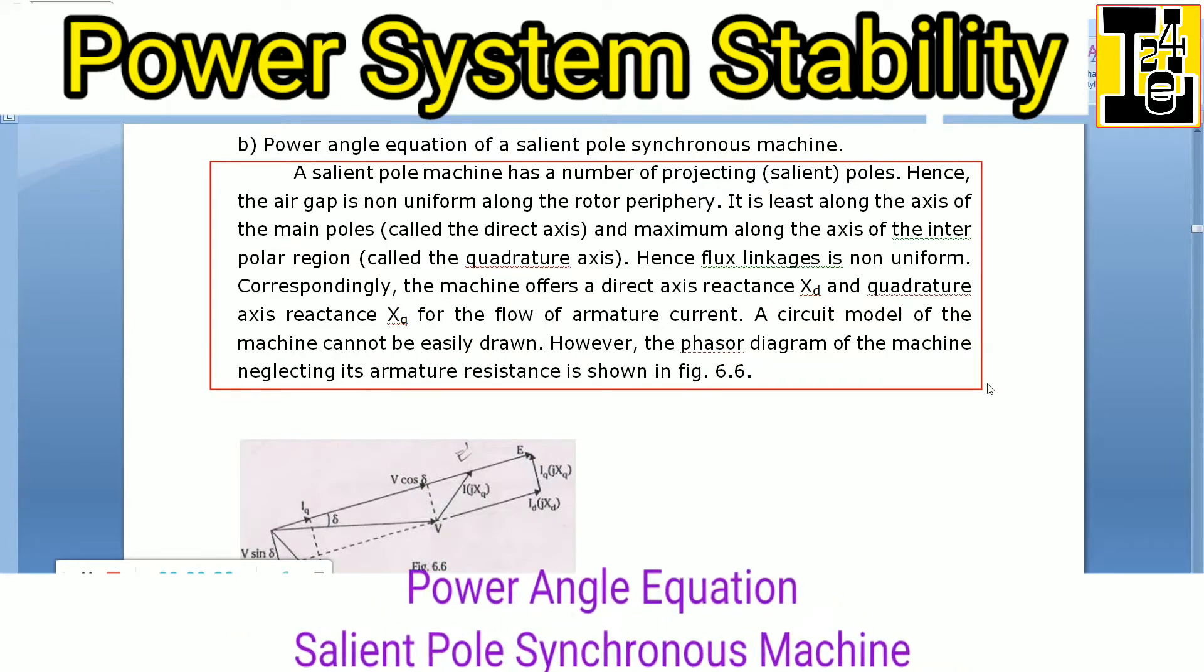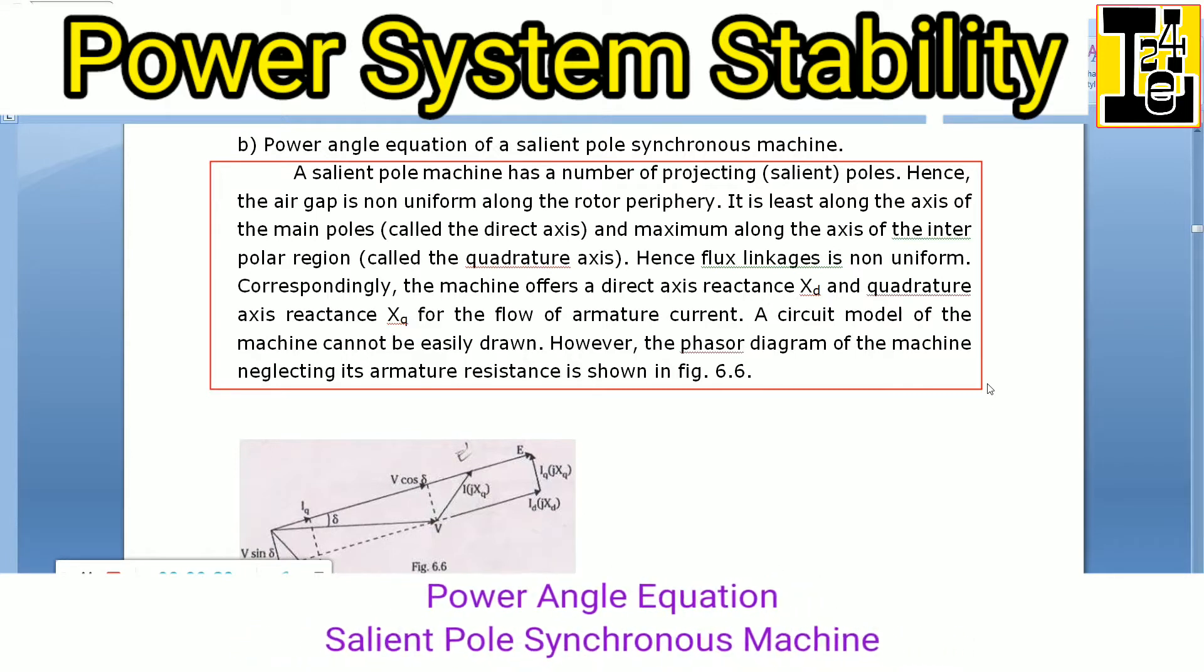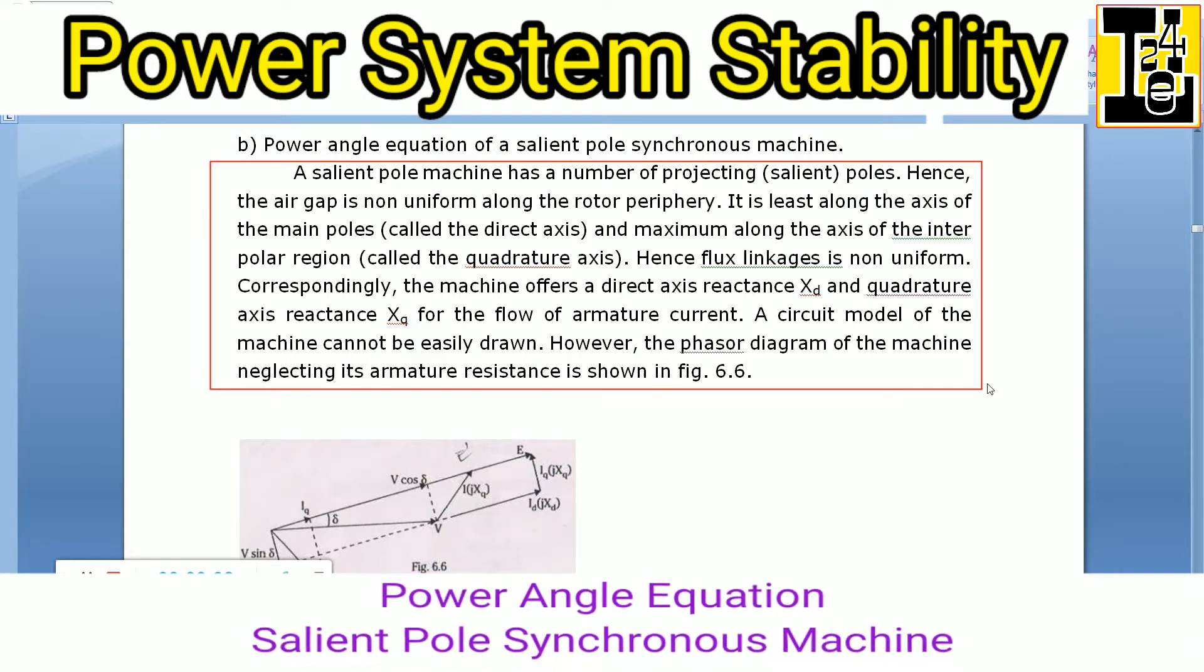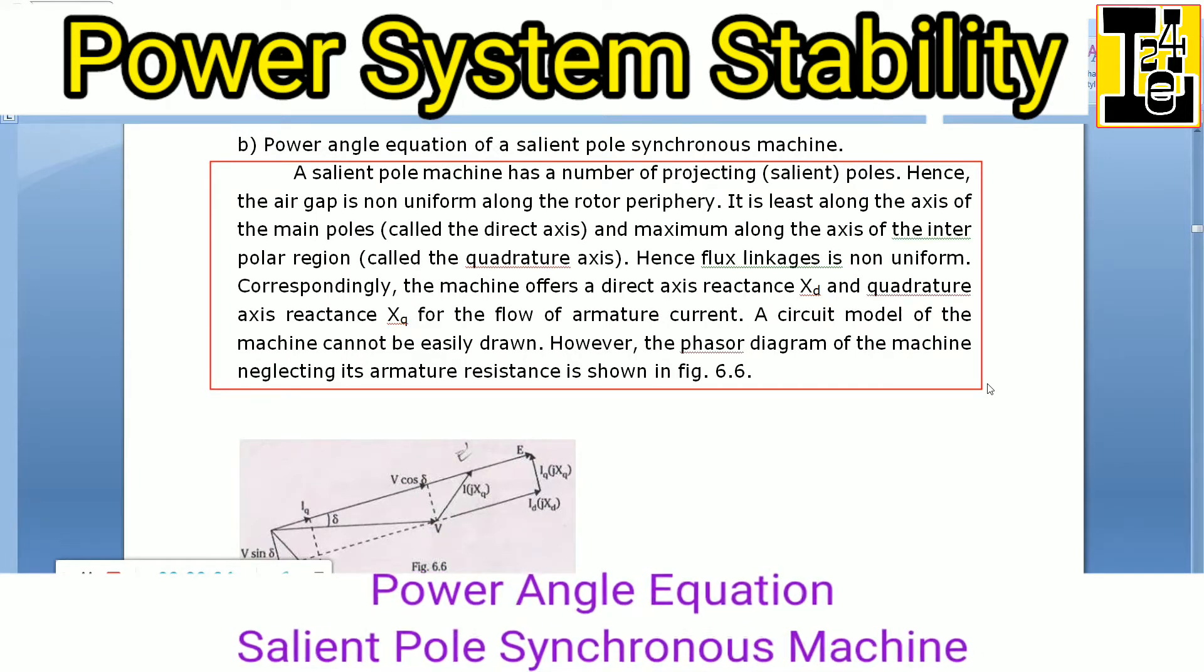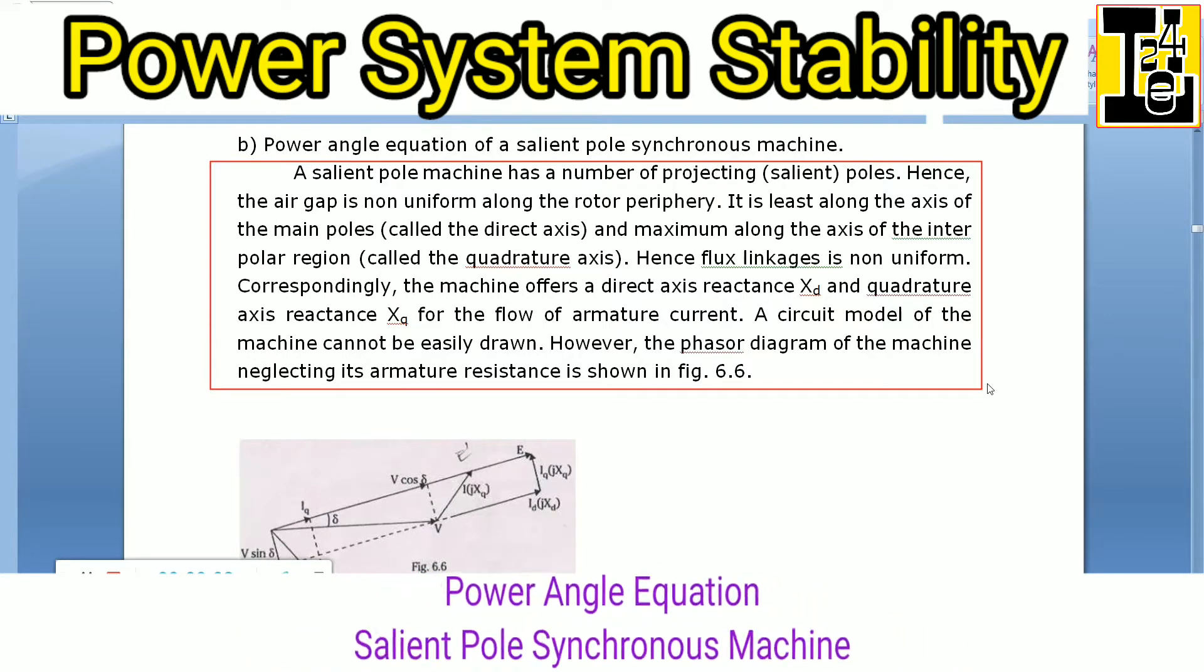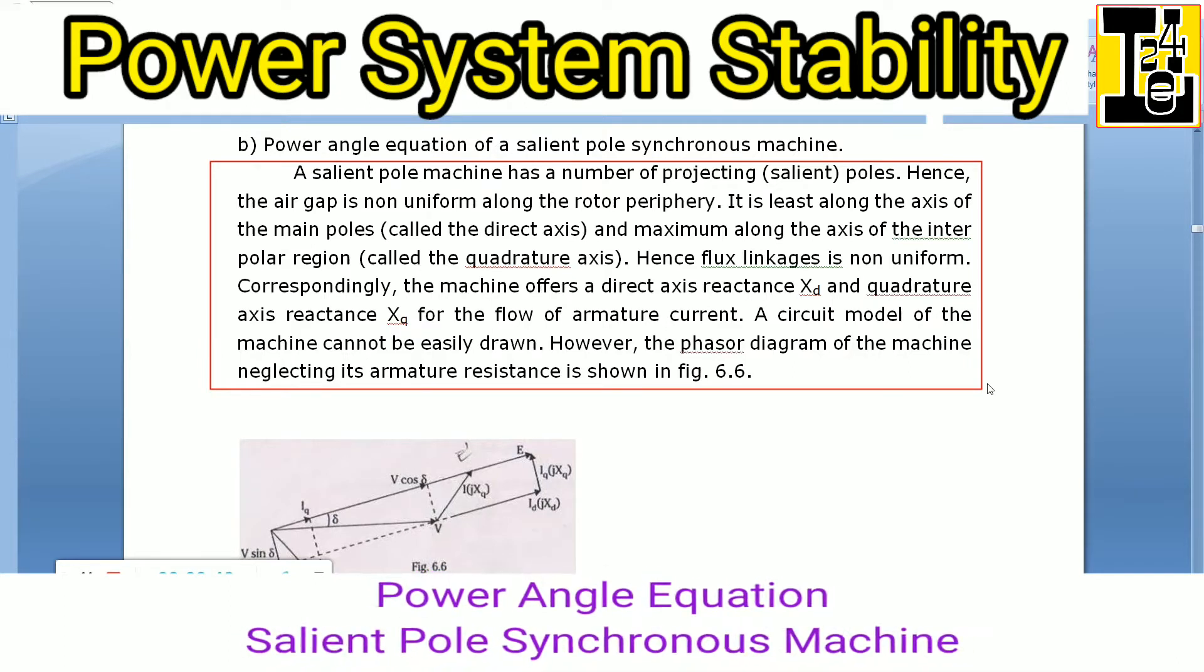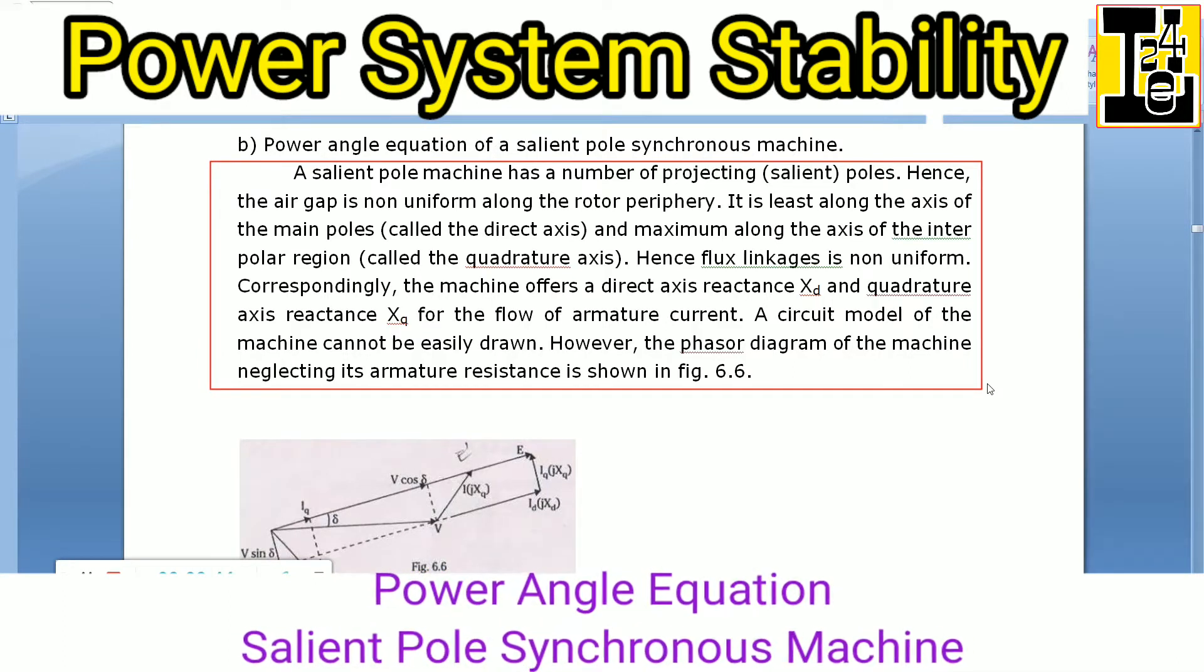The air gap is least along the axis of the main poles, that is the direct axis, and maximum along the axis of the interpolar region, that is the quadrature axis.